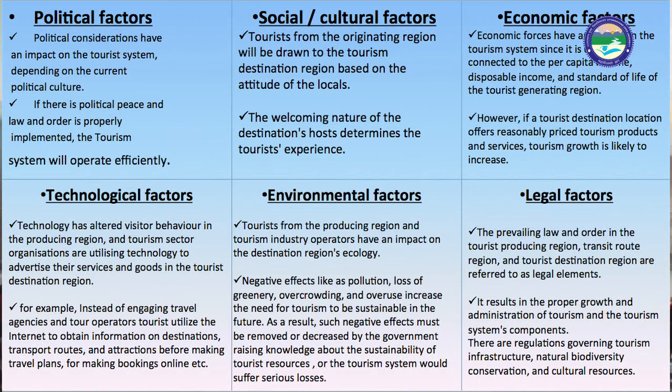Economic factors: generally, tourists only prefer those destinations which are quite affordable and where they can visit comfortably. Technological factors: technology has altered visitor behavior in the producing region, and tourism sector organizations are utilizing technology to advertise their services and goods. For example, instead of engaging travel agencies and tour operators, tourists now utilize the internet to obtain information on destination transport routes and attractions before making travel plans and online bookings.